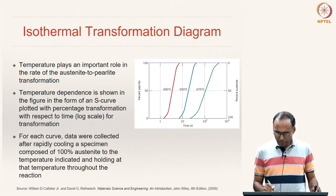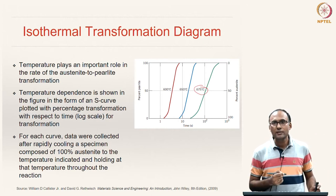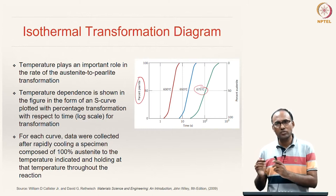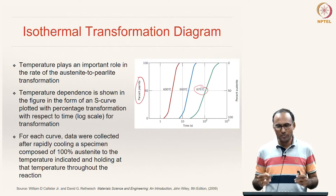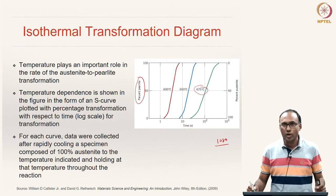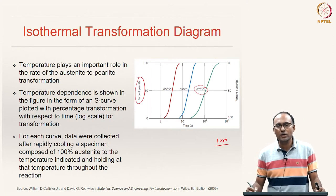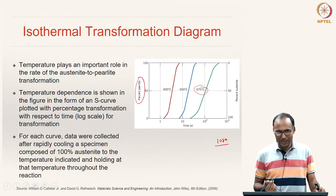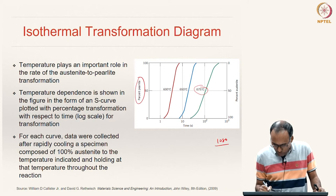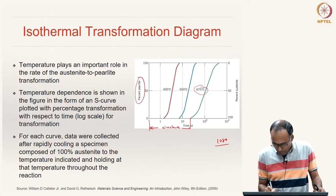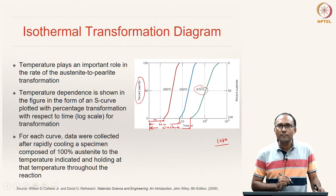At 675°C you measure the percentage pearlite as a function of time for a set of samples. For 1080 steel — which has eutectoid composition — austenite is unstable and must transform to alternate layers of ferrite and cementite, forming pearlite. At high temperature, the initial flat region of the S-curve represents the nucleation stage, and different temperatures show different nucleation stage lengths.